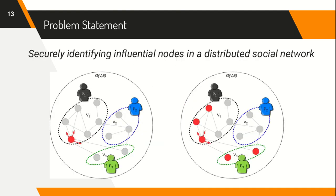Under this setting, the problem we focus on is to identify influential nodes with respect to the overall network. This is an important problem to be addressed when introducing targeted interventions in the spread of diseases, to achieve efficient advertising strategies, and in general to identify key players in a system.